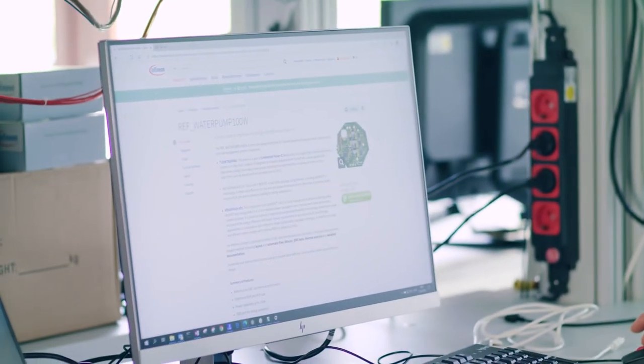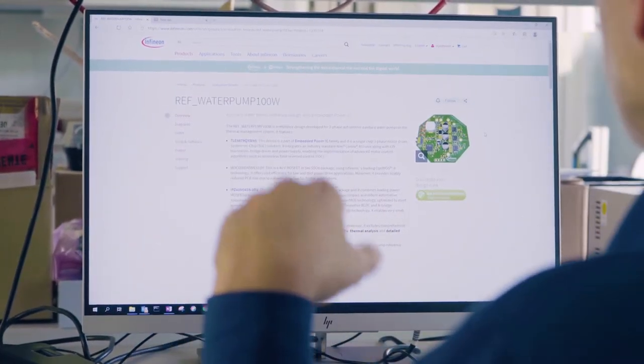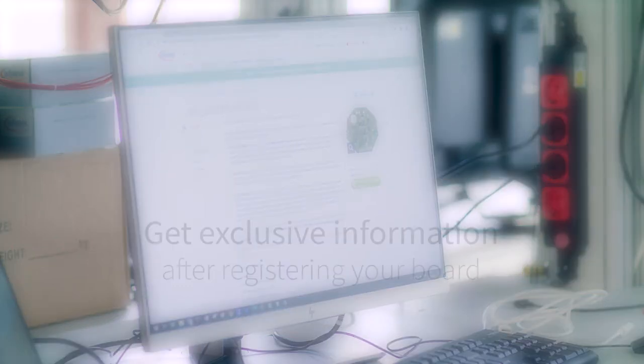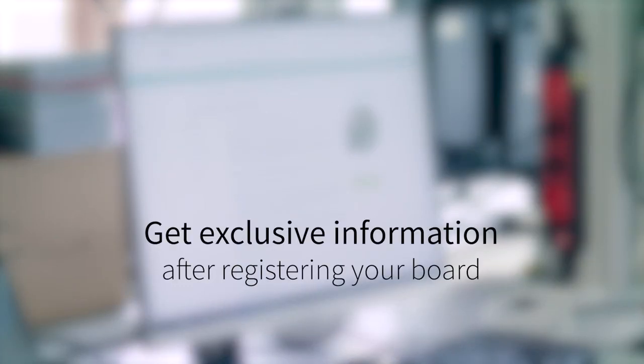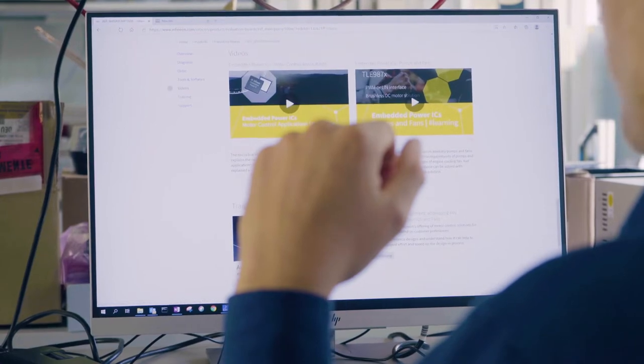If you go to the web page you will be able to register your board using the ID that can be found underneath the QR code. With registering your board you will get access to exclusive information such as layout and schematic files, EMC tests and thermal analysis. If you want more information you will also be able to find micro learnings on this web page.